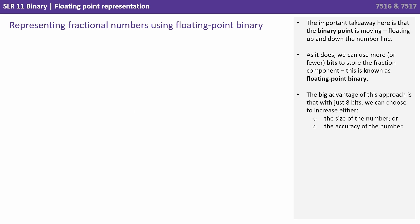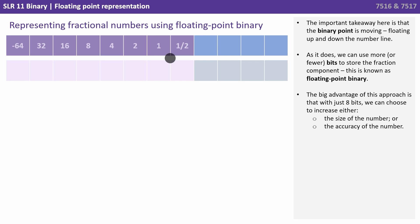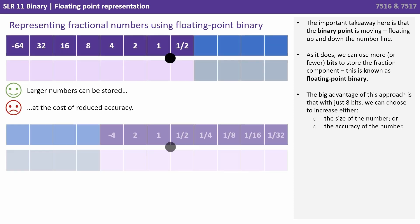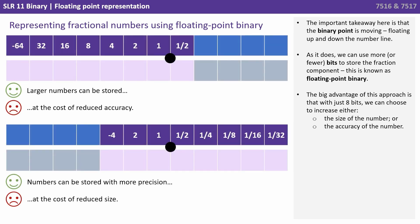The important takeaway here is that the binary point is moving, floating up and down the number line. As it does, we can use more or fewer bits to store the fractional component, and this is known as floating point binary. The big advantage of this approach is that with just 8 bits, we can choose to increase either the size of the number or the accuracy of the number, but at the cost of the other.